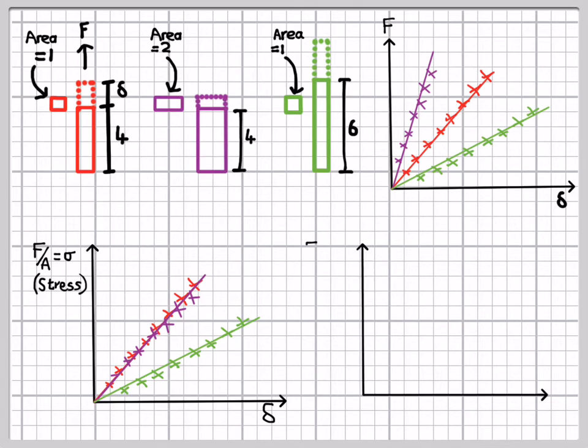So what we can now do is remove the effect of length by dividing the extension by the original length. That, of course, is the property known as strain. And if we do that, if we plot stress against strain, we're now plotting properties that are simply to do with the material behavior and don't have any geometric effects in there. And so we now have three curves which are on top of each other.